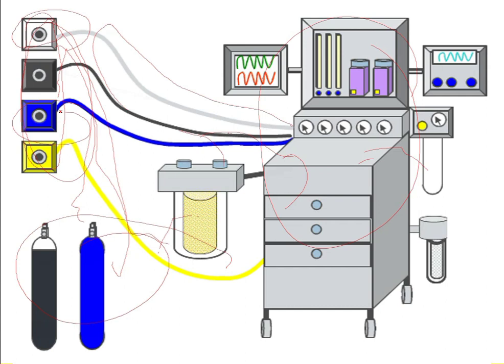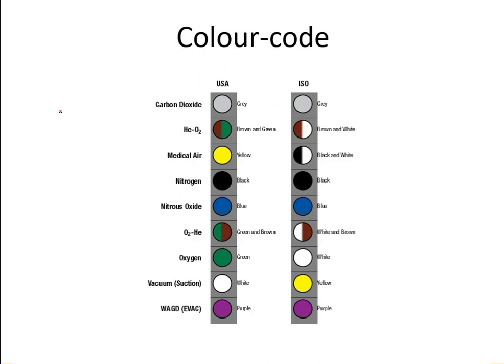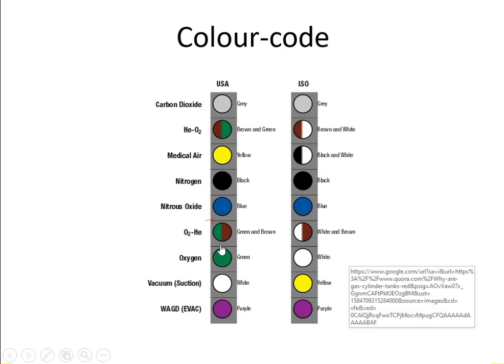The safety system includes many components. The first is the color code — each gas has its own color. Oxygen is a good, peaceful gas, and that's why it comes in white in European countries. But in America, oxygen is green. Both colors symbolize peace.